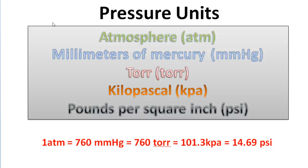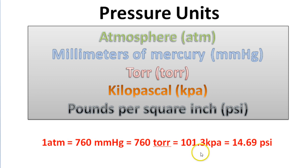How do all these units relate to one another? If you take a look at the bottom here, it tells you that one atmosphere is equal to 760 millimeters of mercury, which is equal to 760 Torrs, which is equal to 101.3 kilopascals, which is equal to 14.69 PSI. So if we have these conversion factors, converting between the different pressure units should be fairly easy, and that's what we're going to do in this next slide.